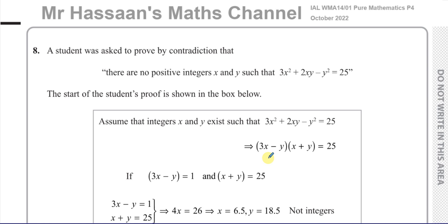The student started by assuming that the integers x and y exist such that 3x² + 2xy − y² = 25, so starting off by contradicting the original statement. So you have to prove that there are no positive integers x and y such that 3x² + 2xy − y² = 25. So you say, let's assume that there are integers x and y that do exist, such that 3x² + 2xy − y² = 25, assuming the opposite of it.